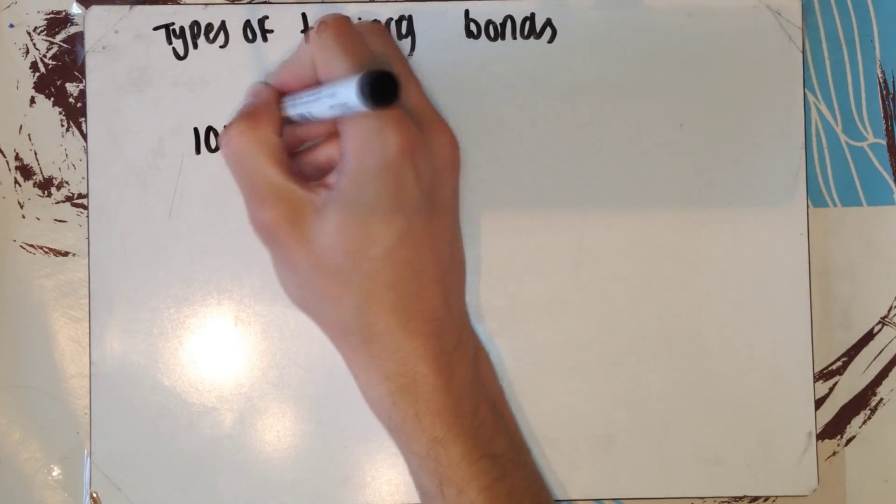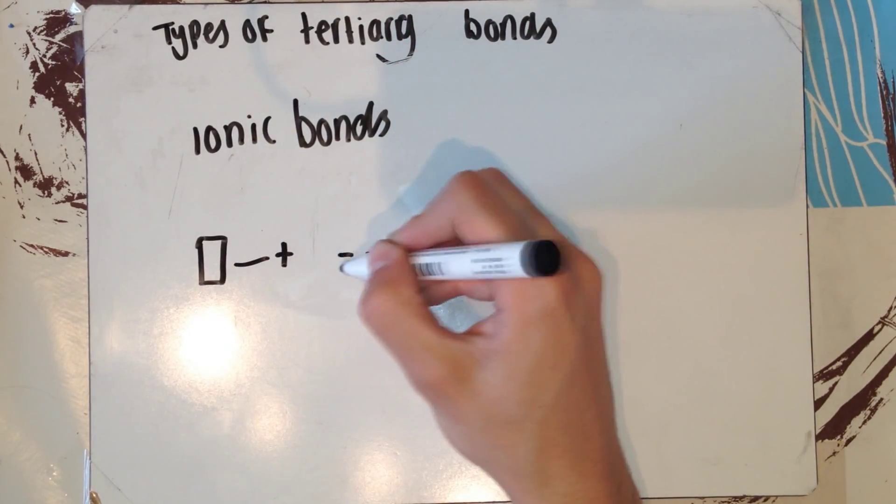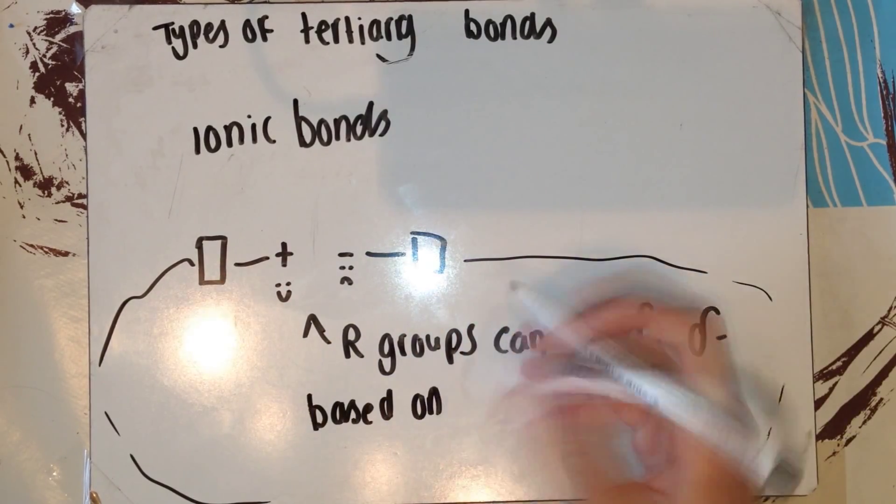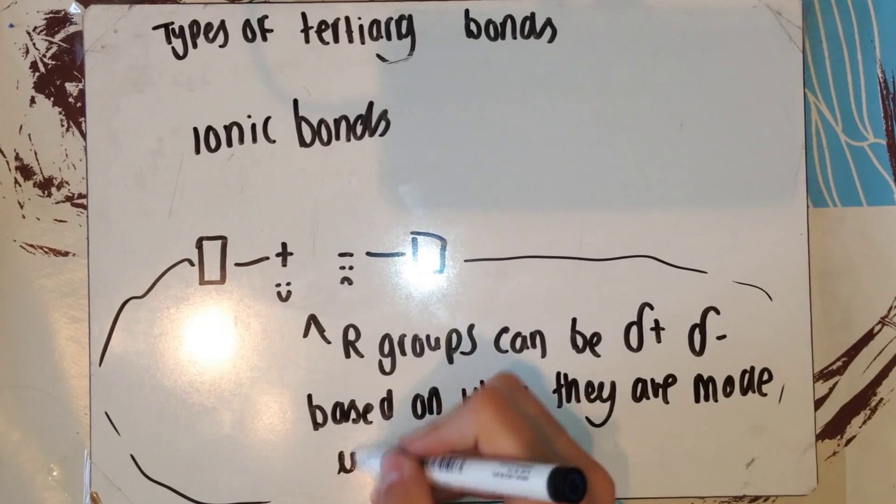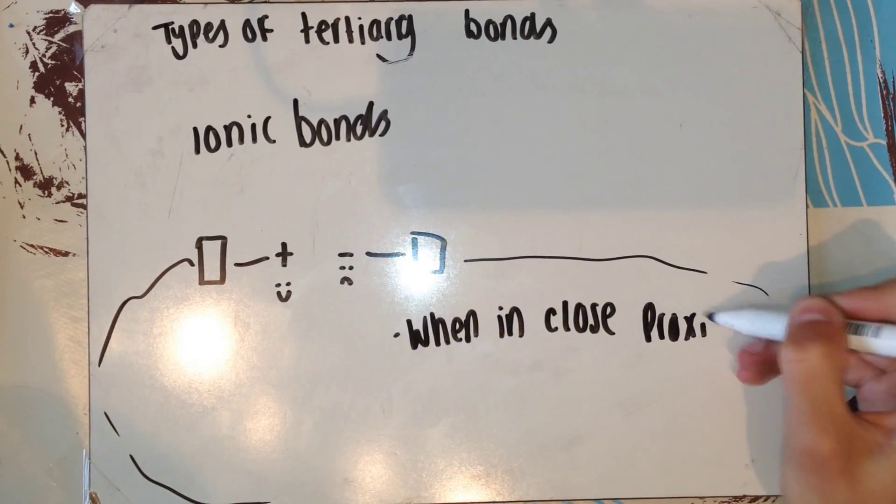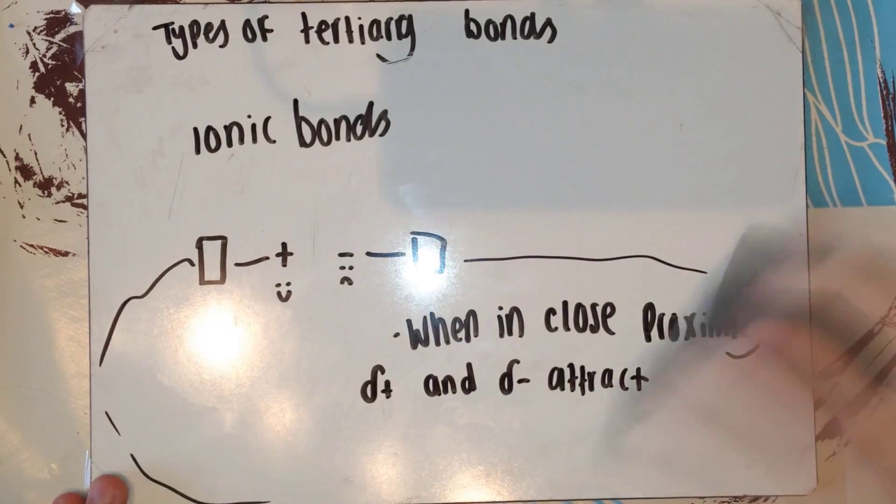Different R groups in the polypeptide chain will contain different atoms and different groups. Therefore, ionic bonds can form. Some of these groups are delta negative, some of these groups are delta positive. This is to do with the electronegativity of an atom and how it can attract electrons, but you don't need to worry about that. Once in close proximity, positive attracts negative, negative attracts positive.